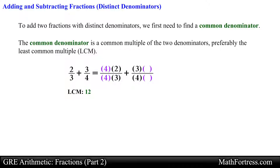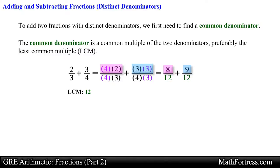In the same manner, to obtain 12 as the denominator on the fraction on the right we need to multiply 4 by 3. To obtain an equivalent fraction we also need to multiply the numerator by 3. Carrying out the products and simplifying the expressions we obtain the following equivalent fractions. Now that both fractions have a common denominator we are free to add the numerators. Doing that we obtain the final answer equal to 17 over 12.